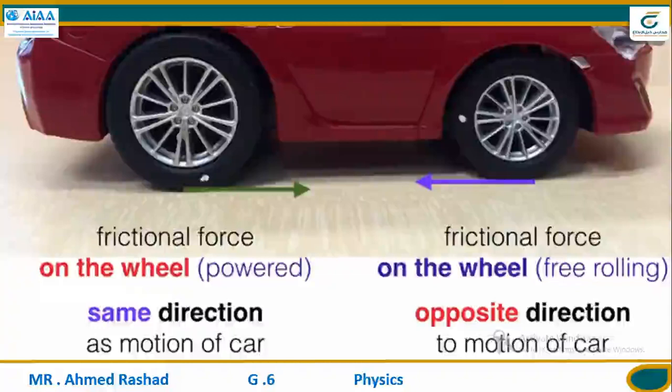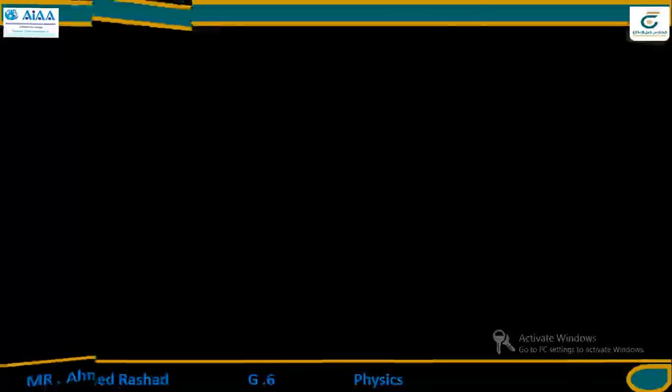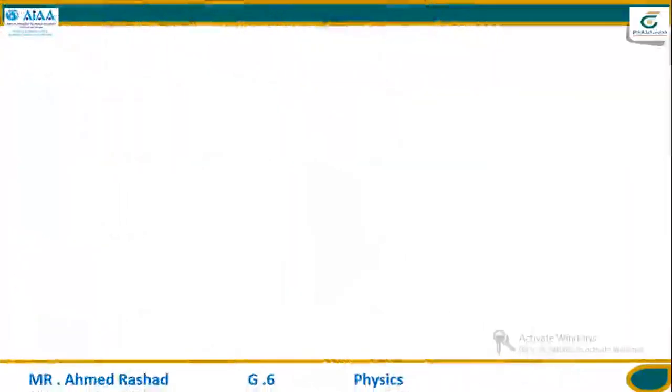The friction force is the force that occurs between two surfaces rubbing together. The factors affecting the friction force are: number one, the type of surface, and how hard the surfaces are pushing together. The direction of friction force is opposite to the direction of motion of an object.